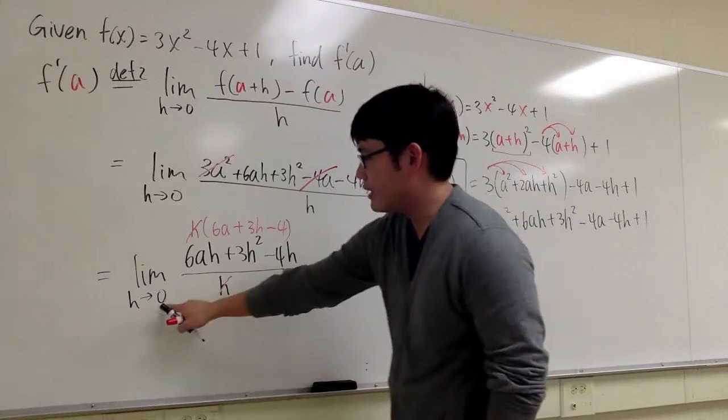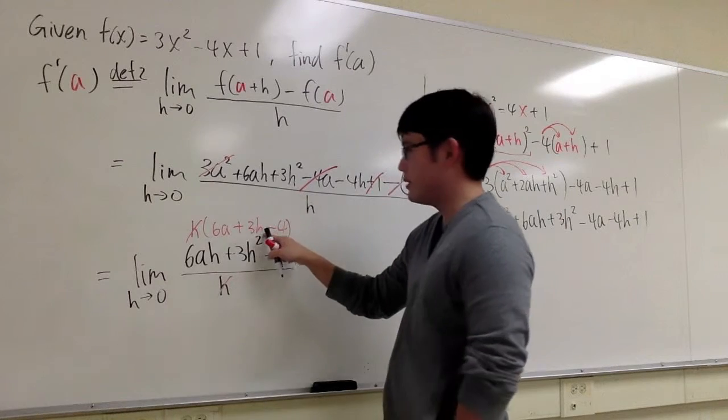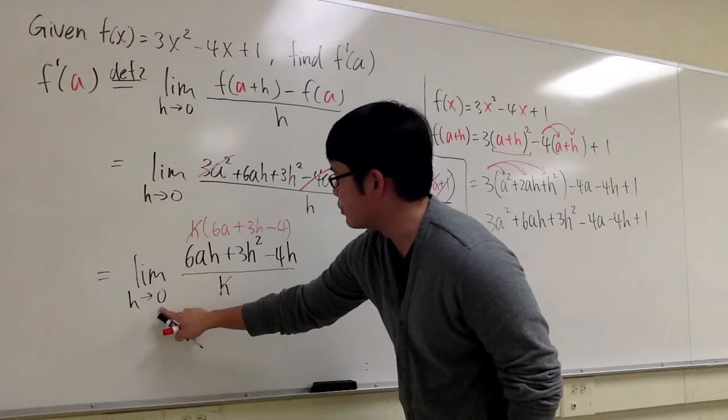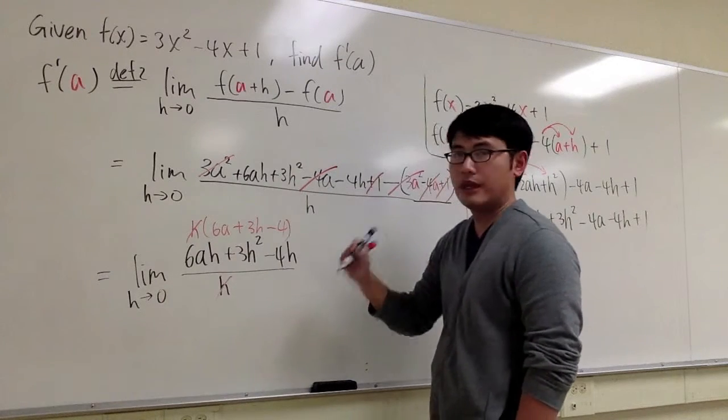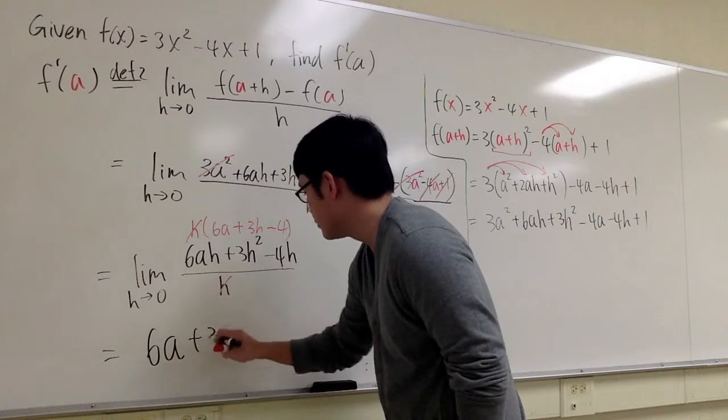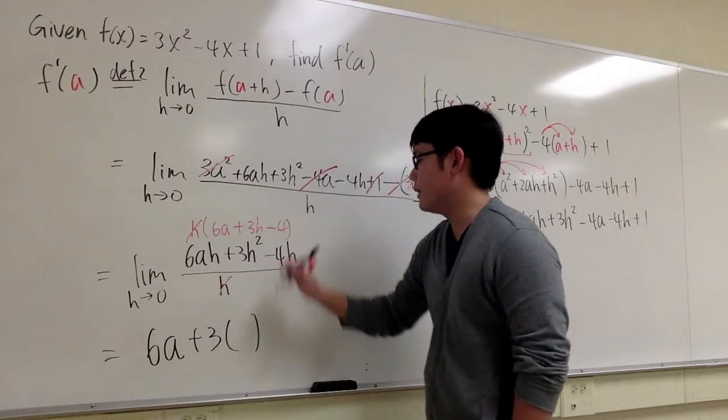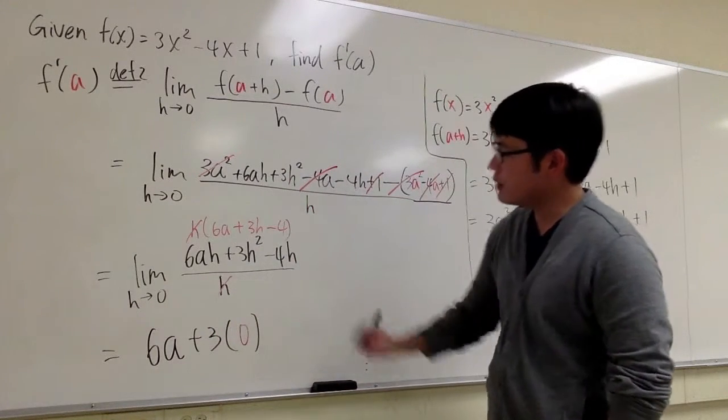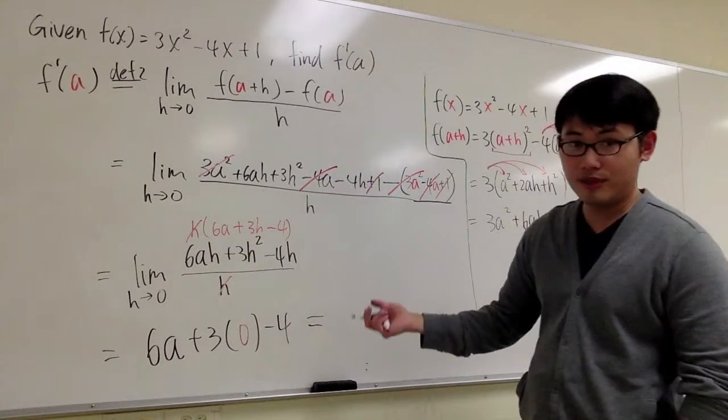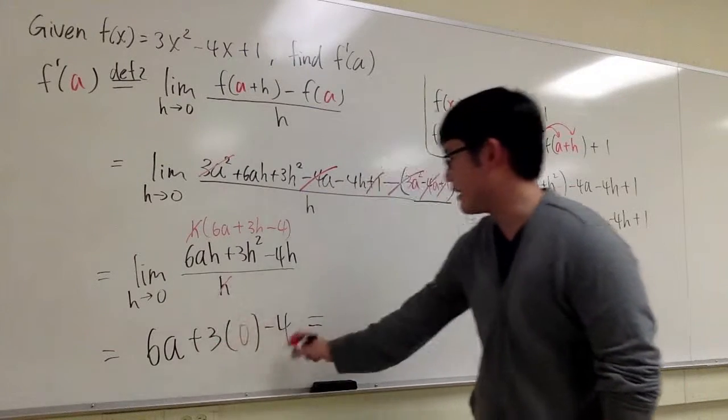Well, what can we do after that? Plug in 0 into the remaining h. Be careful with this. It's h you're putting to 0, so plug in 0 into h. So it looks like 6a + 3 times 0 into h. So 3 times 0, and then we still have the - 4. And of course, 3 times 0 is 0. 6a - 4, that's the answer.